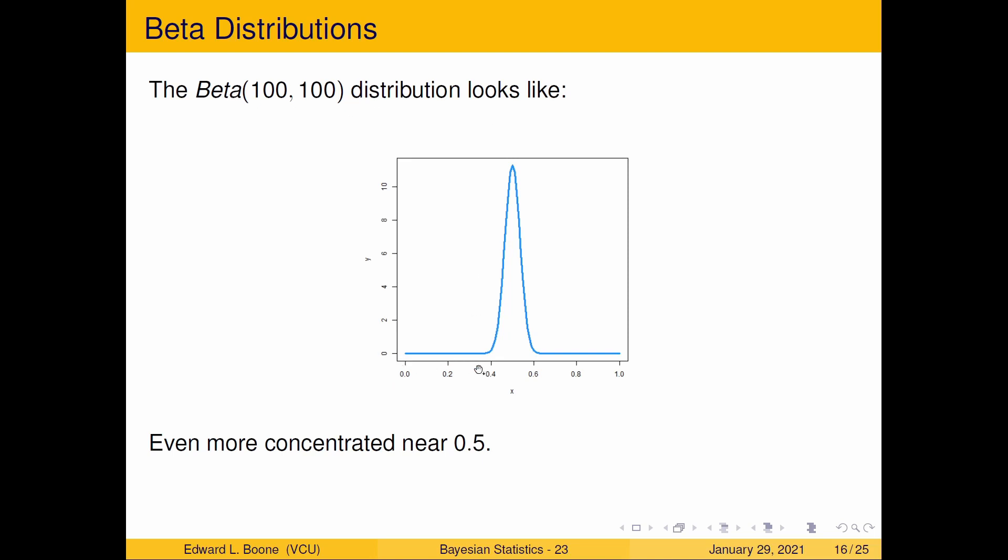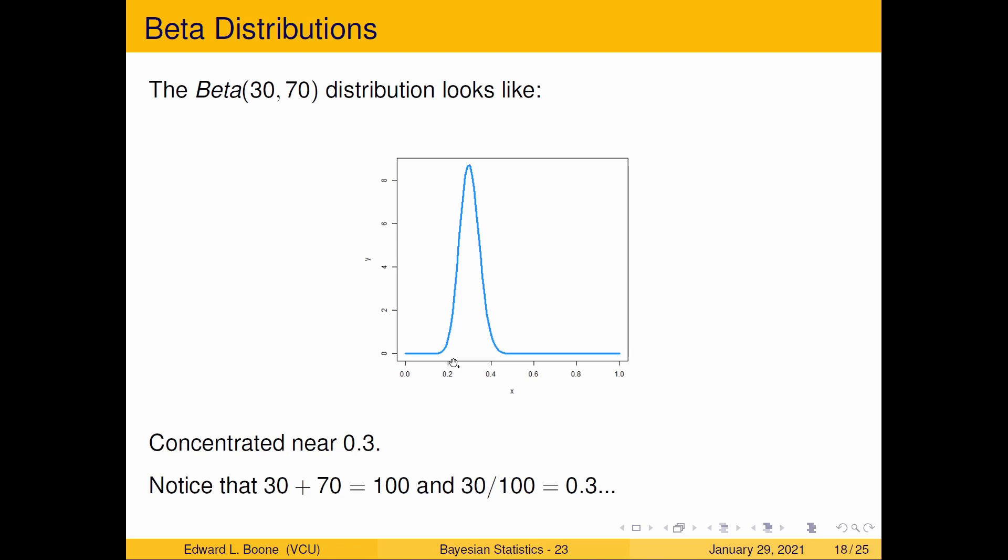Notice how flat it is until it goes up and it comes down and gets flat again. We can move it around—a beta(30,70) pushed it over to around 0.3. We can also notice that here 30 plus 70 is 100, and 30 over 100 is 0.3.